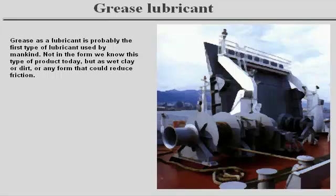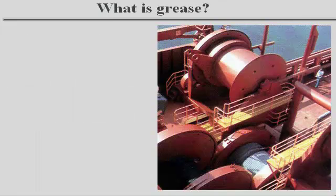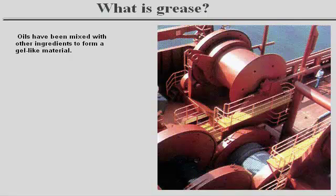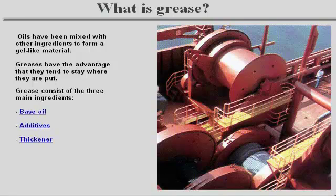Grease as a lubricant is probably the first type of lubricant used by mankind. Today, this is a complex technology with a complex range of various products. Oils have been mixed with other ingredients to form a gel-like material. Greases have the advantage that they tend to stay where they are put. Grease consists of three main ingredients: base oil, additives, and thickener.